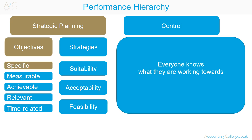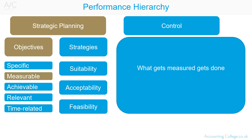Objectives should be specific, so everyone knows what they are working towards. Objectives should be measurable — with business, what gets measured gets done. Objectives need to be achievable; they can be inspirational but not unachievable. If employees believe an objective is unachievable, they will give up trying to achieve that objective.